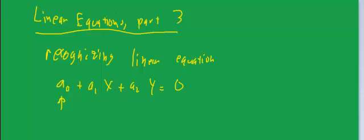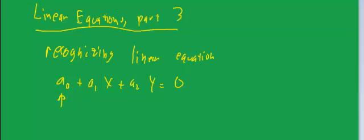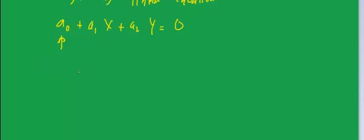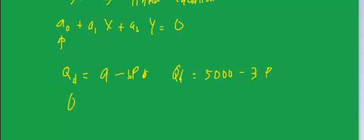What's a typical way that they show up in a first year economics class? Well you might see a quantity demand relationship. Let's use an example: quantity demanded equals 5000 minus 3P, and then we have quantity supplied is equal to negative 200 plus 8P.